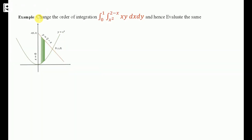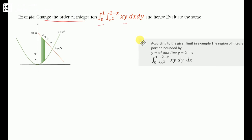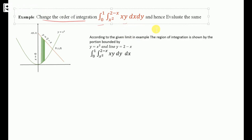Example: Change the order of integration for the integral from 0 to 1, x² to (2 minus x), of xy dy dx, and hence evaluate it. According to the given limits, the limit of Y is in the form of X and the limit of X is constant. This means we first take the integration with respect to Y, that is dy then dx. So we are taking a strip parallel to the Y axis, where Y varies from x² up to (2 minus x).